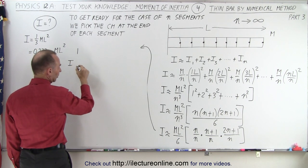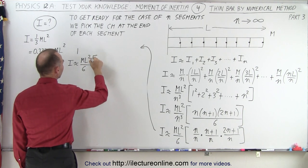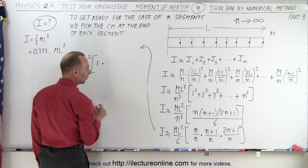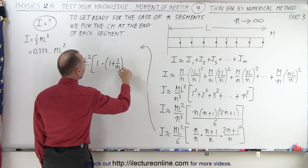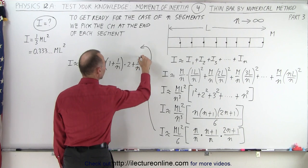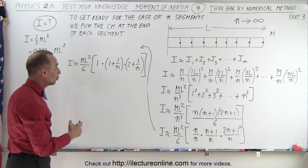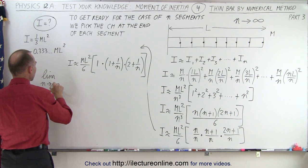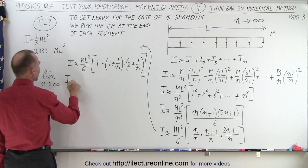The moment of inertia is approximately equal to mL² over 6 times: n divided by n, which is 1, times n goes into (n+1), which we write as (1 + 1/n), times n goes into (2n+1), which is (2 + 1/n). Now what we're going to do is let n go to infinity, and find the limit as n goes to infinity.